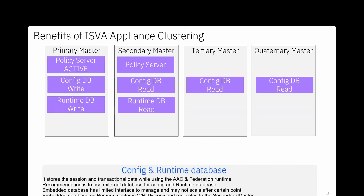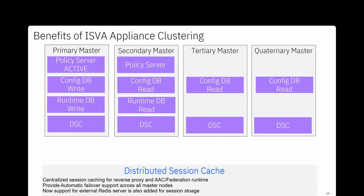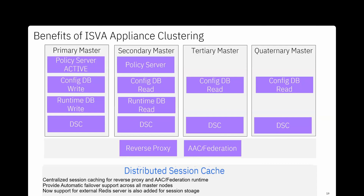The embedded config DB stores all configurations such as access policies and API definitions for OpenID or OAuth. The runtime DB stores short-lived transactional data. The database on the primary master is in write mode and replicates data across all cluster members. The distributed session cache can run on any of the four masters and supports auto failover — so even if the primary master DSC goes down, services continue to run. The reverse proxy and AC federation runtime can be deployed on any master node or non-master node.